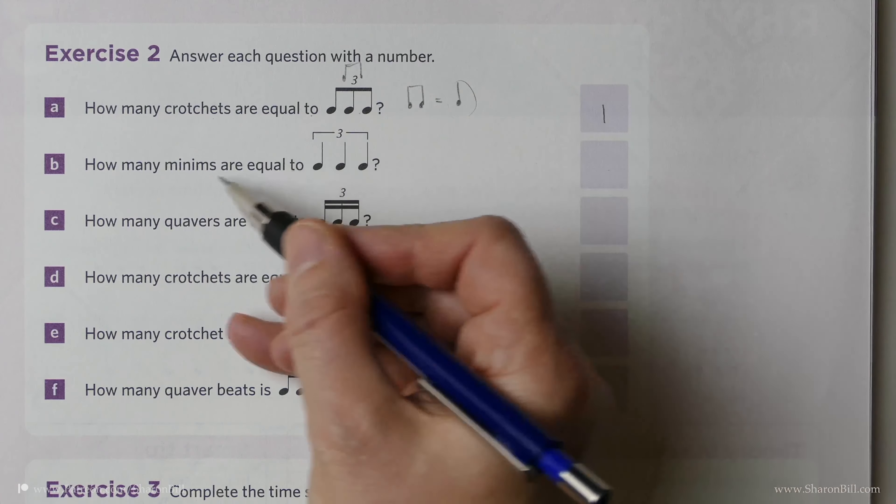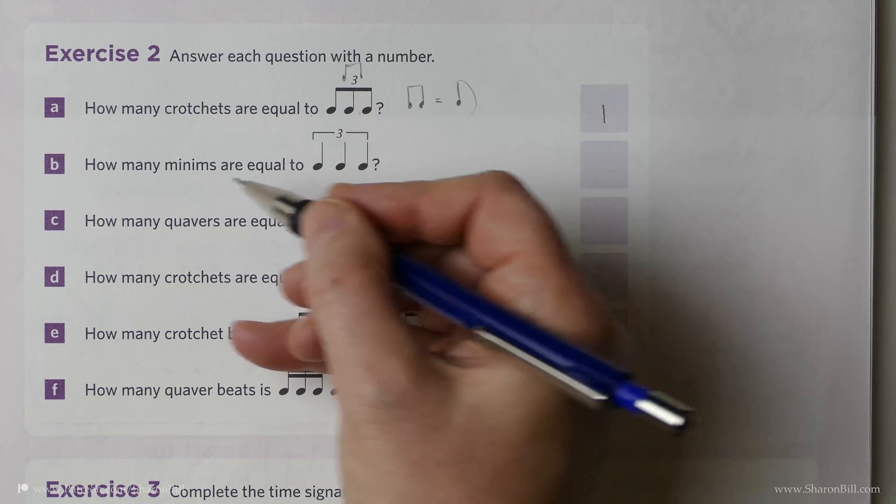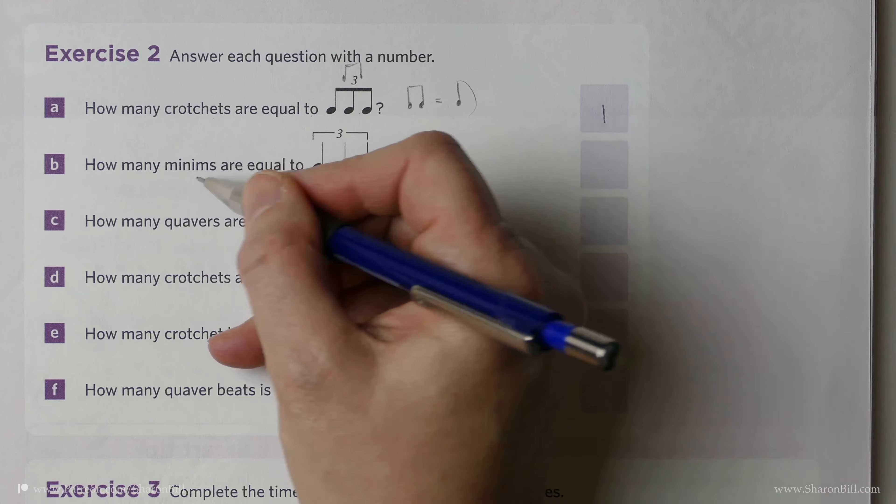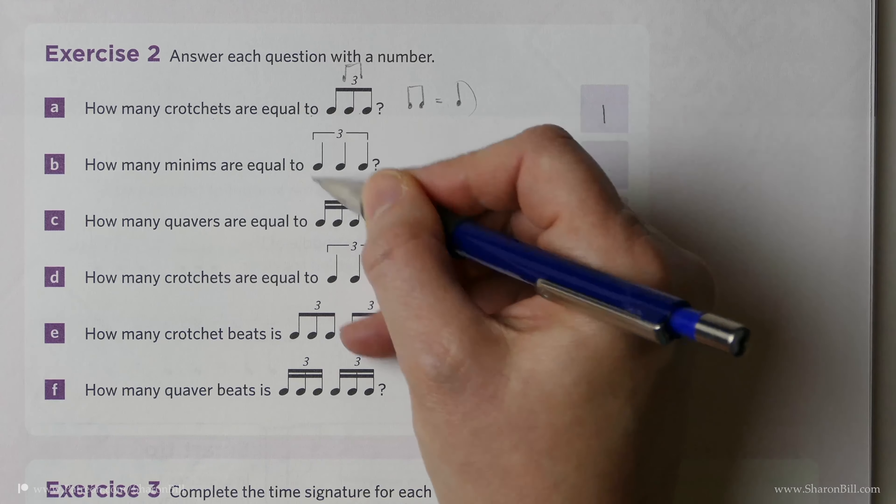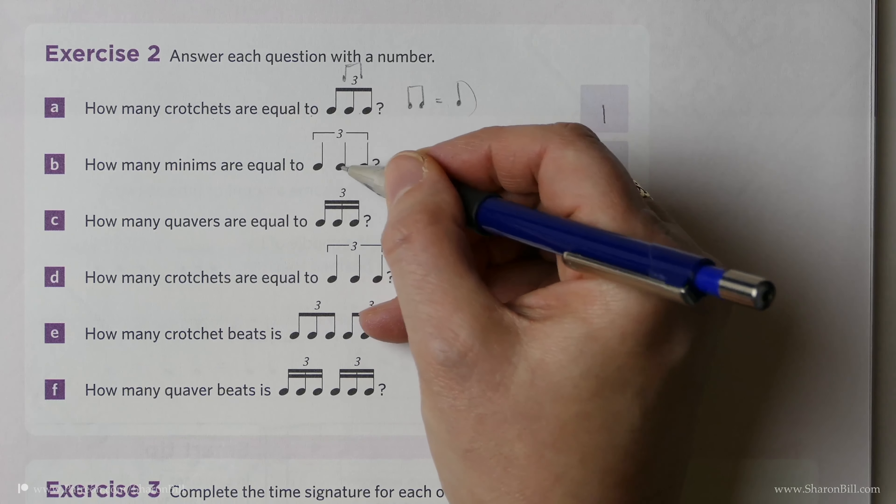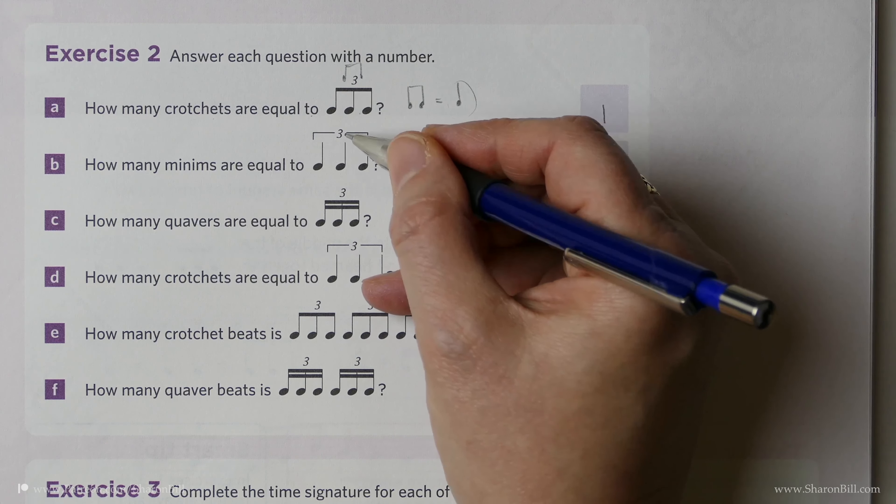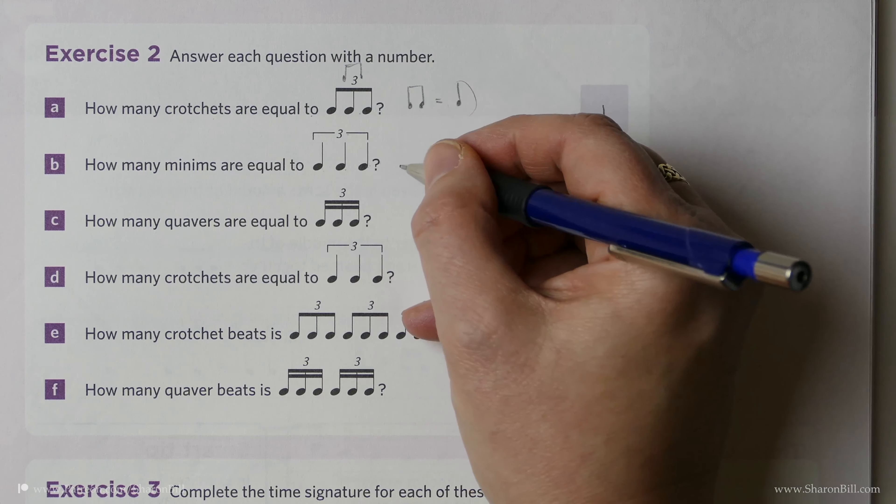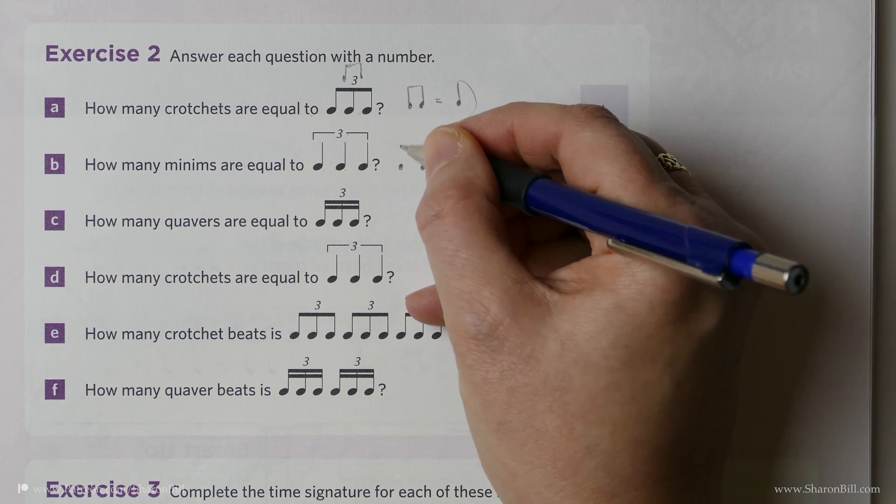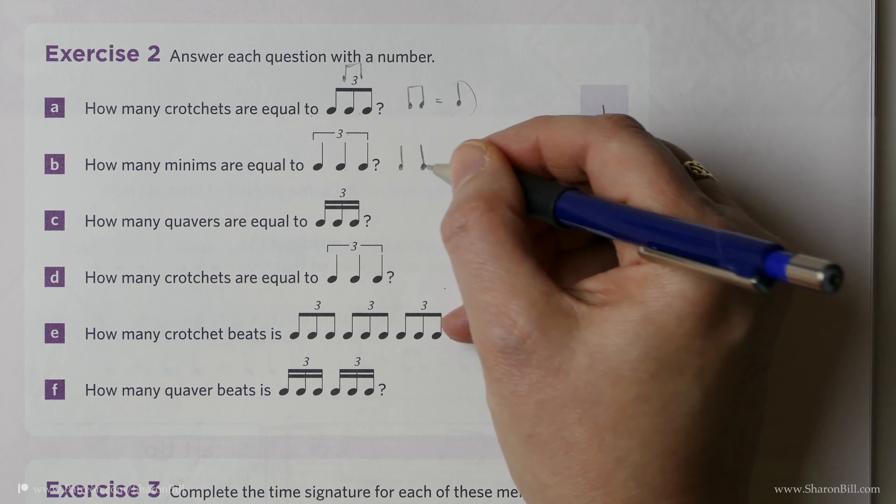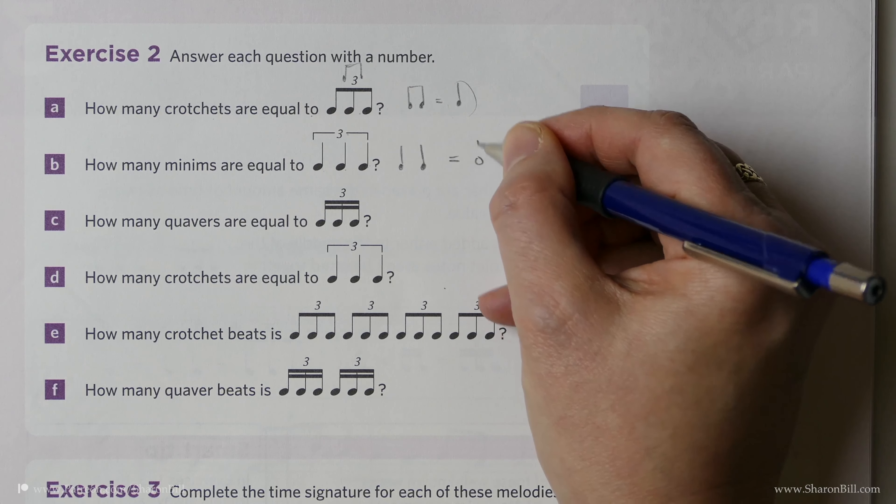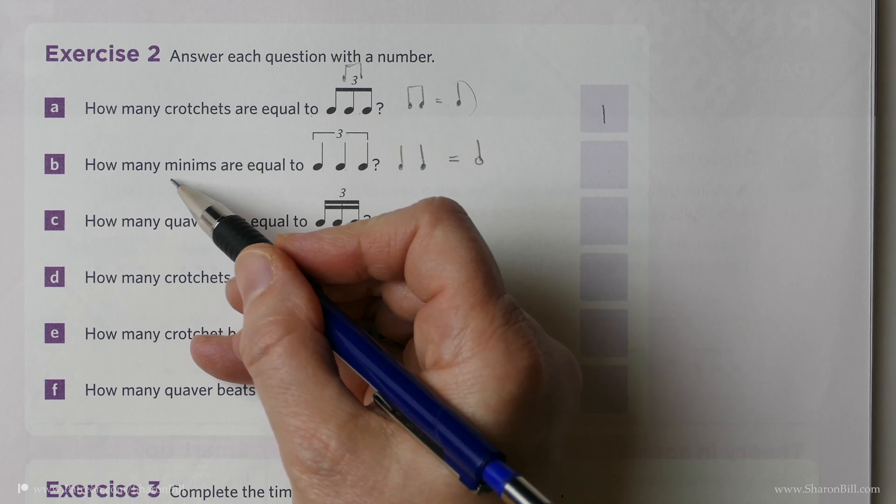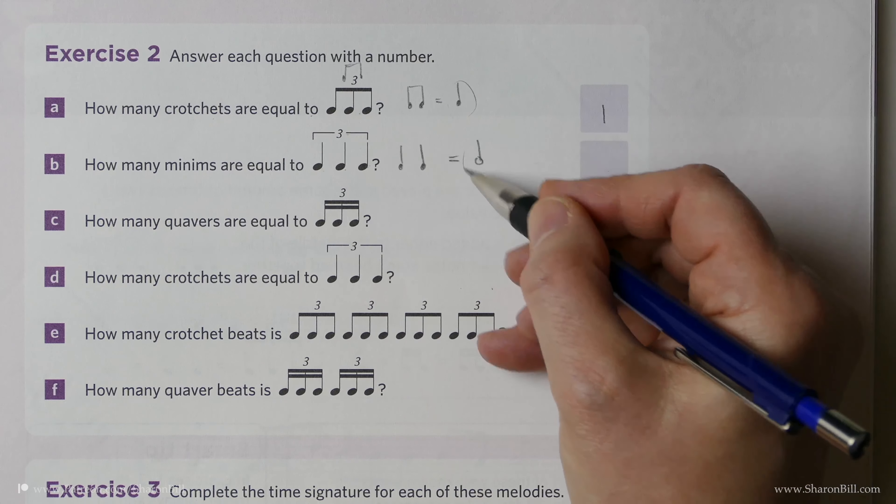And so now, how many minims are equal to this group in this triplet? We have 3 crotchets with a triplet, which means 3 in the time of 2. So 3 crotchet beats in the time of 2 crotchet beats. And we know that 2 crotchets equals 1 minim. So how many minims? 1.